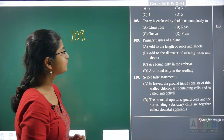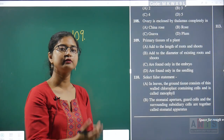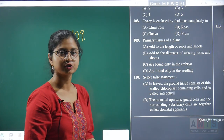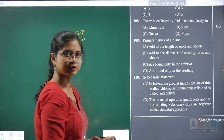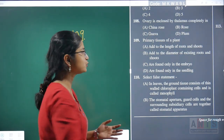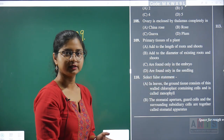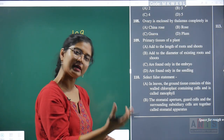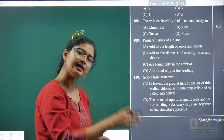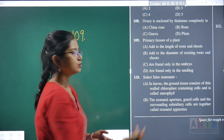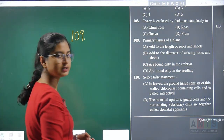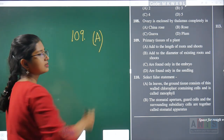Question 109: what possible functions do primary tissues of a plant perform? They add to the length of roots and shoots — this is correct. Adding to the diameter is done by secondary tissues, not primary. Primary tissues are not found only in the embryo or only in the seedling; they are present in mature plants too. Hence, question 109's correct answer is option A.